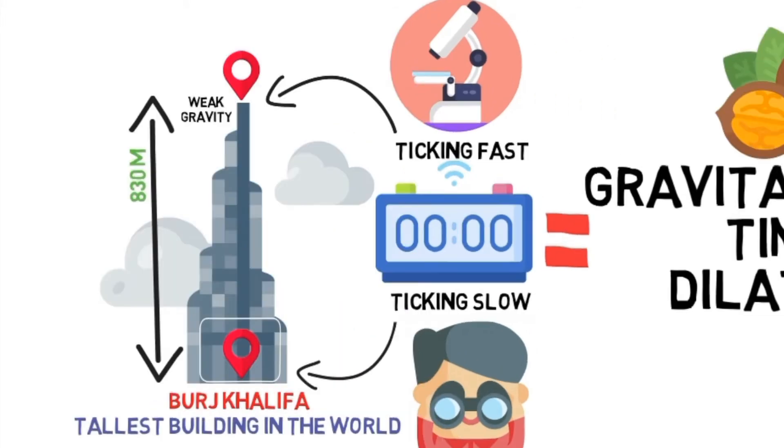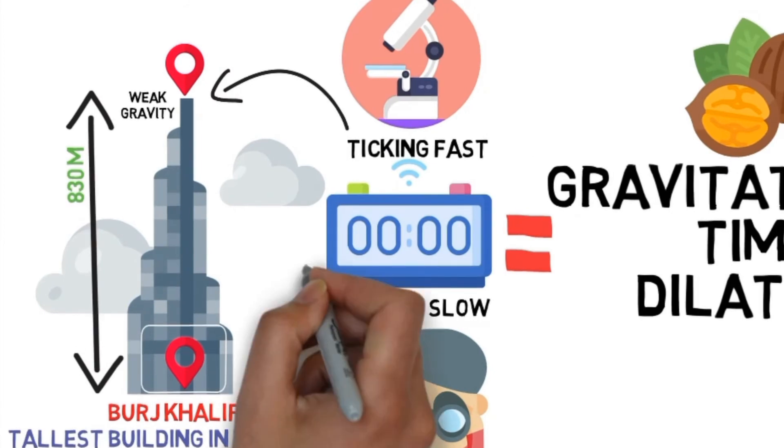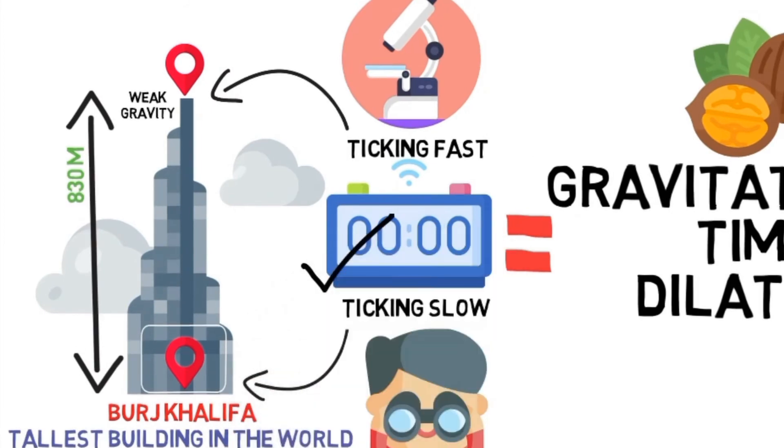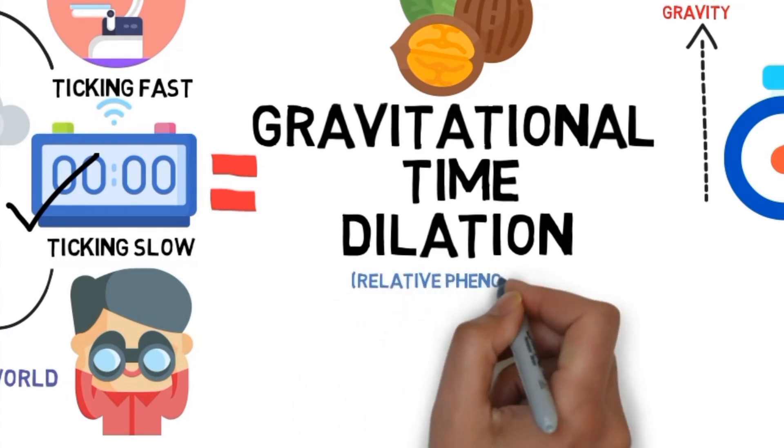We must note that there is nothing wrong with the clocks. Both clocks are right at their place. Gravitational time dilation is a relative phenomenon.